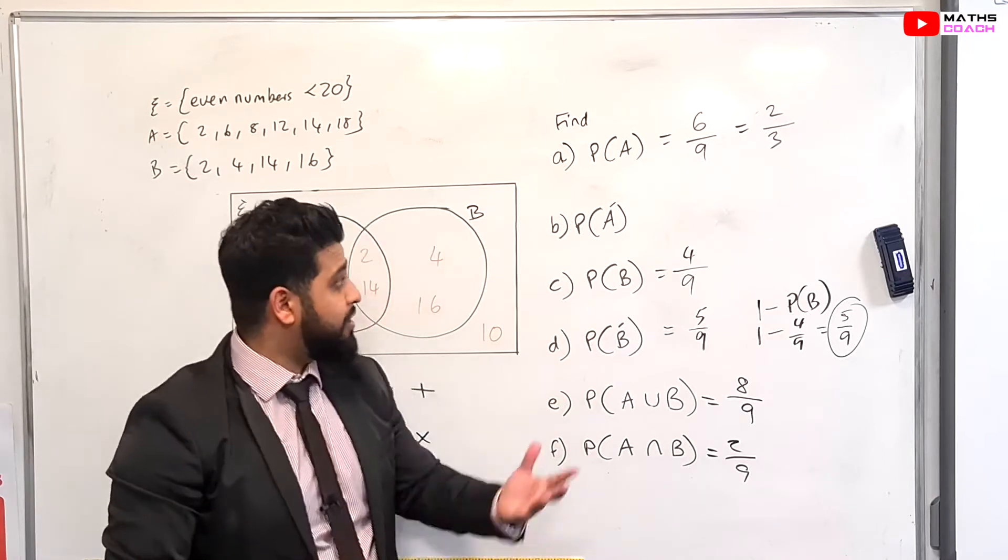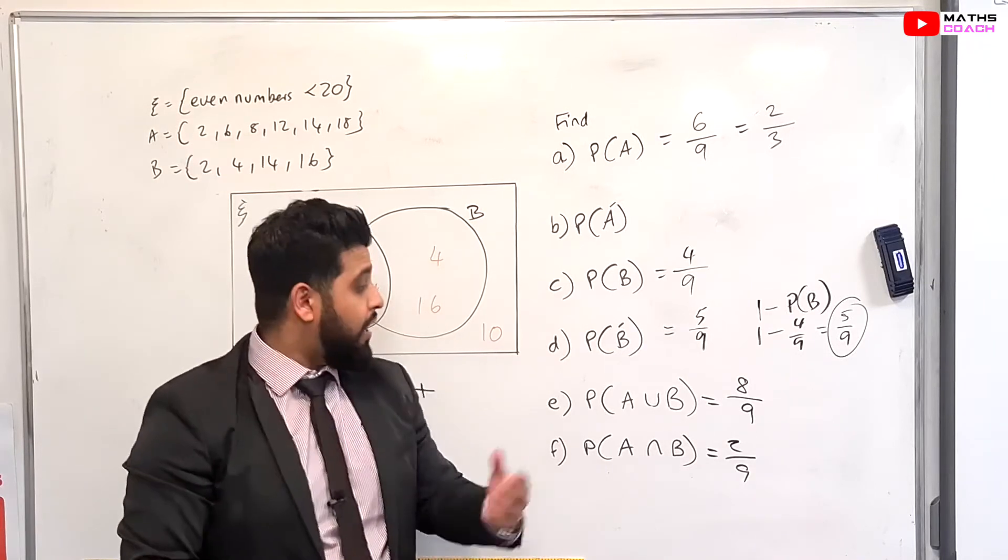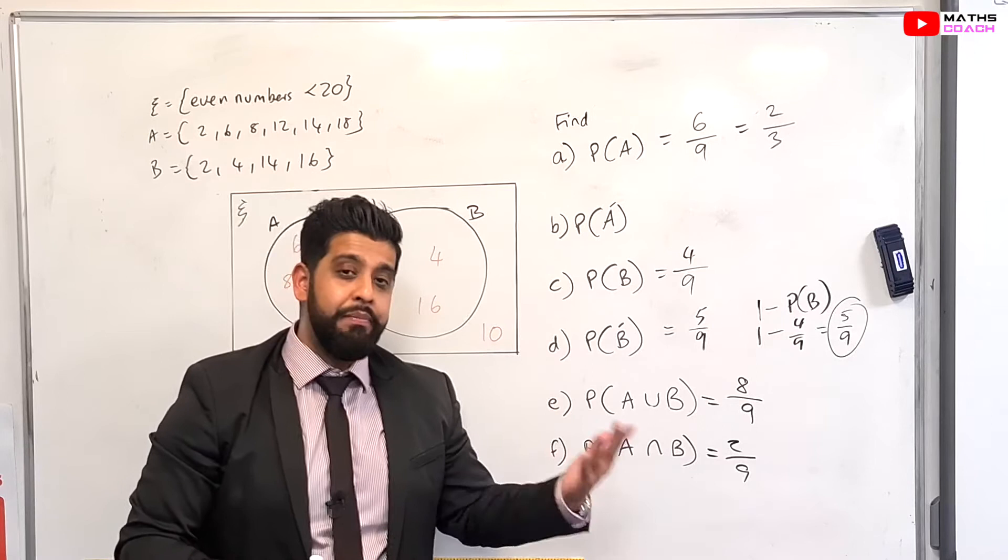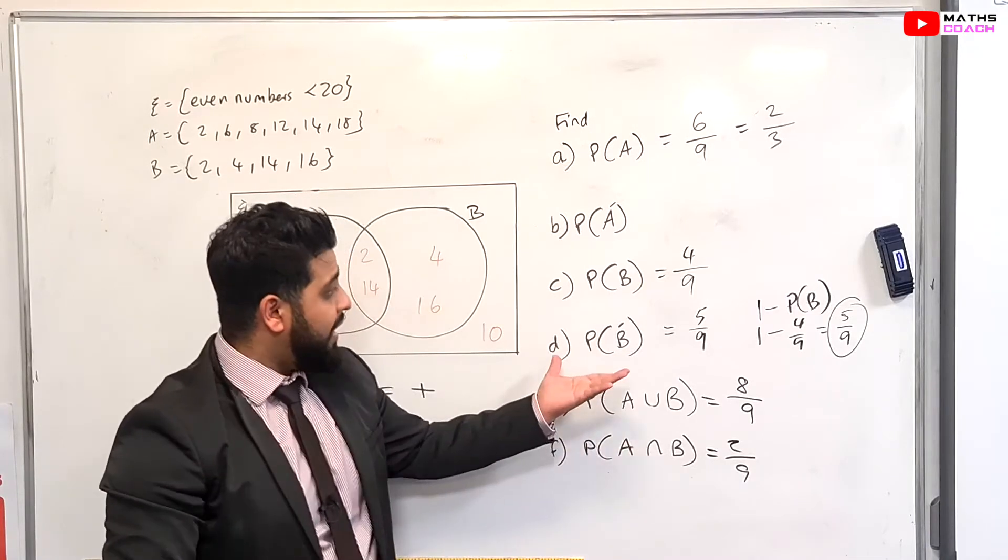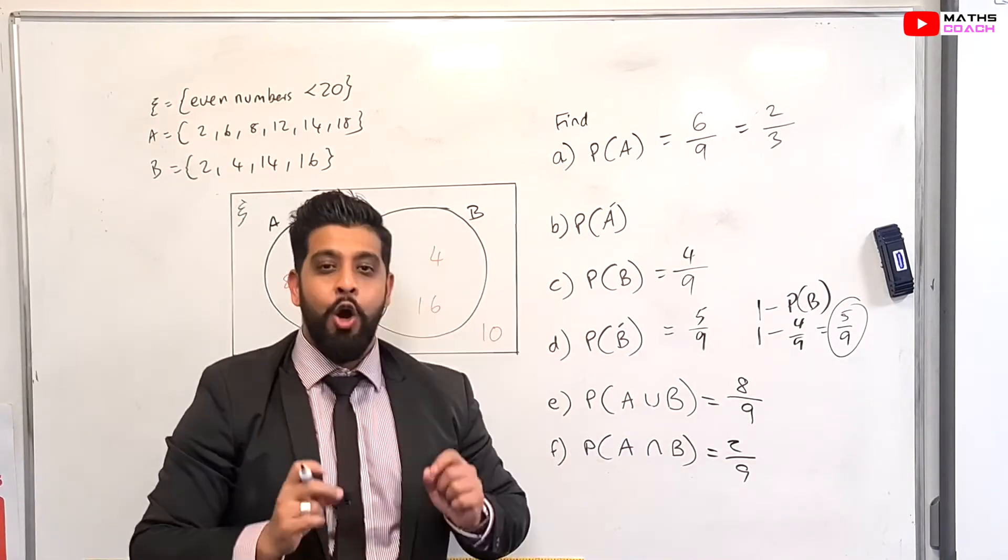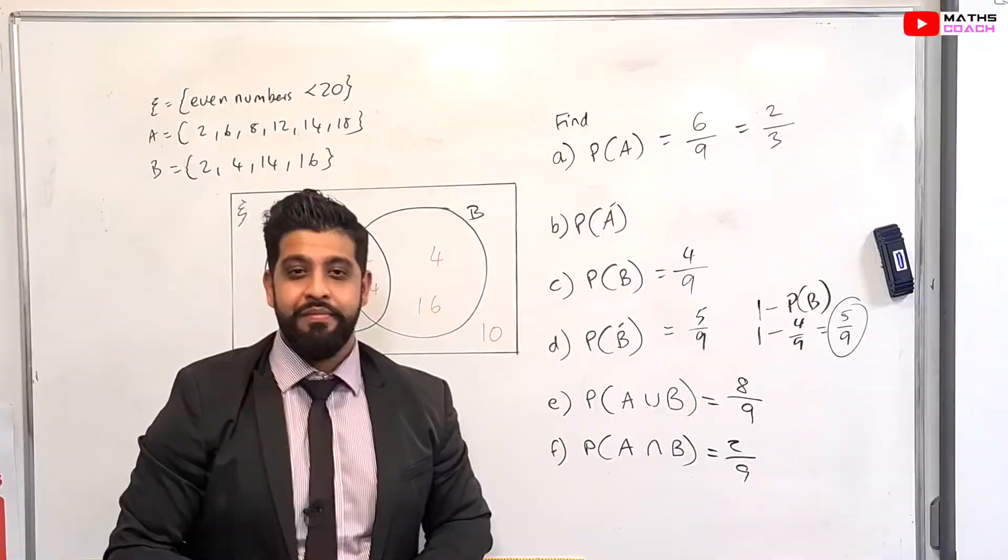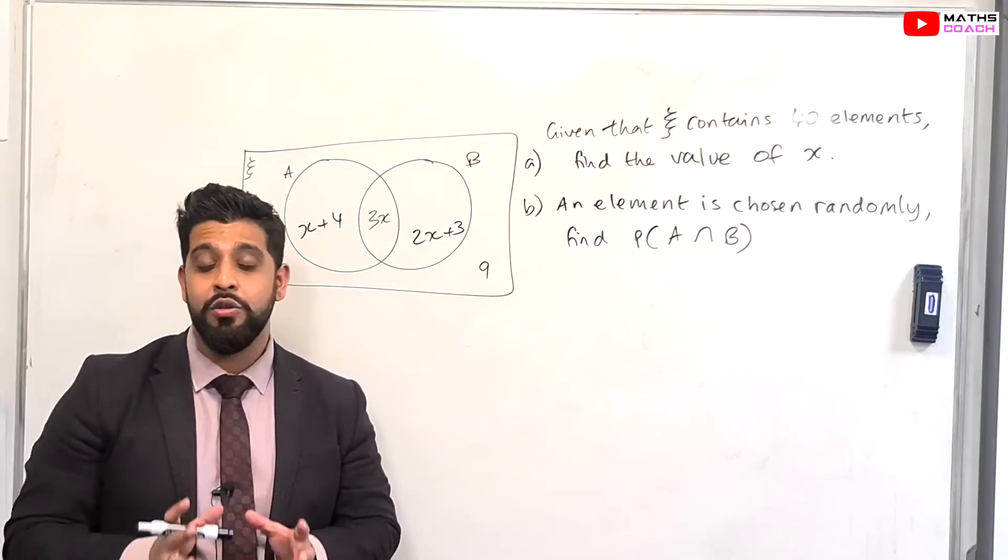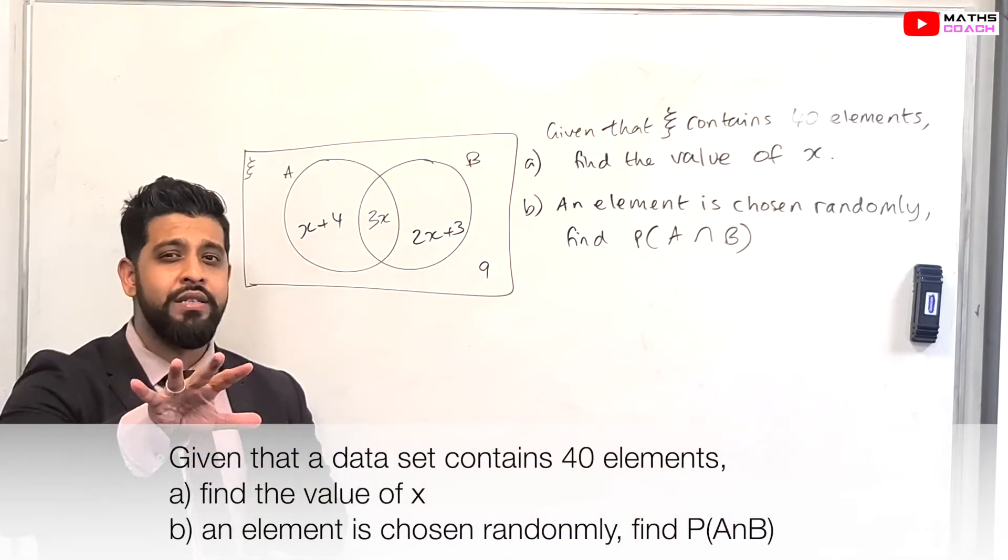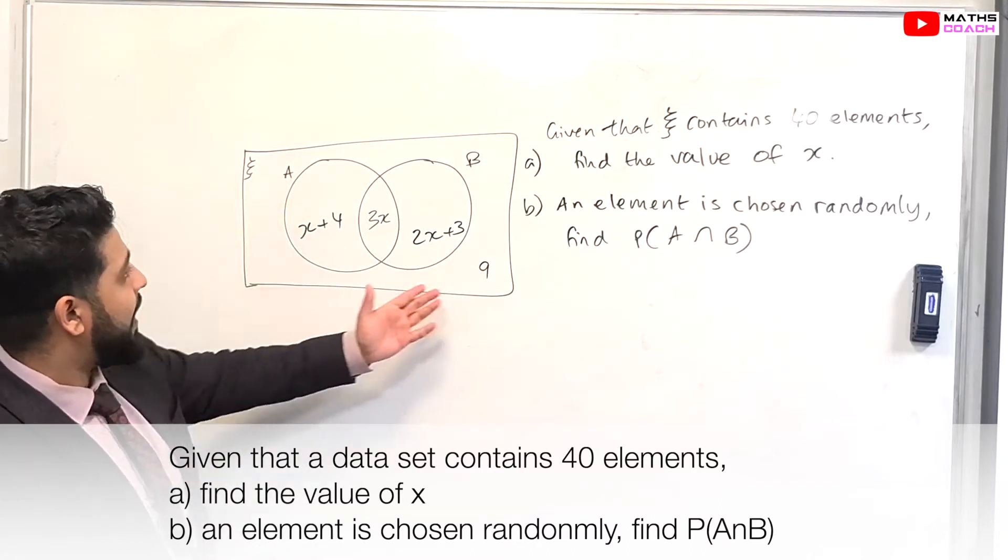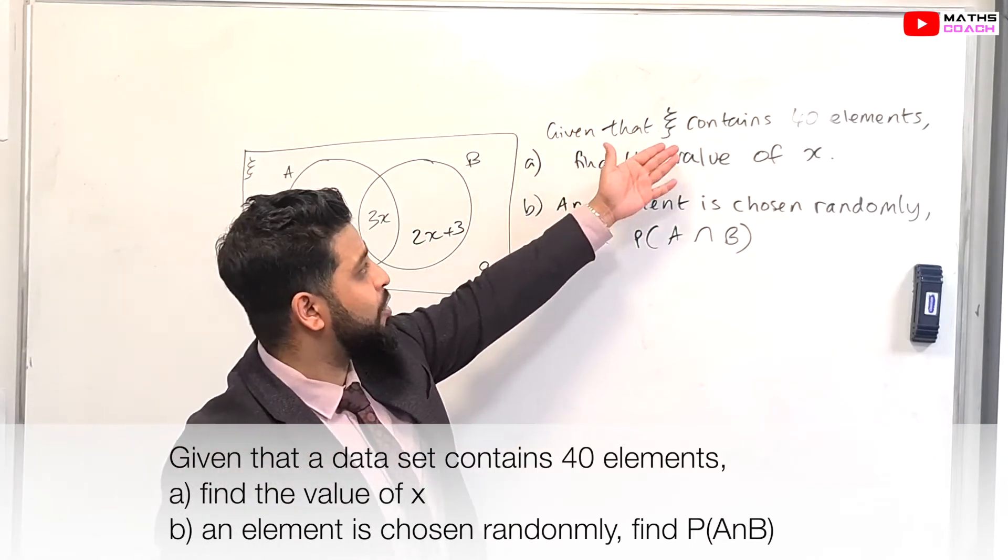I found that with Venn diagram questions, they are starting to move away from the set notation and sort of ask you the questions in sentences. So they'll ask you, what's the probability of event A and B happening, rather than giving you the symbol. But just in case they do turn up, you're not stunned and surprised by what the symbols represent and you are prepared. Hopefully you've understood that. We'll look at the harder examples for Venn diagram in the following questions.